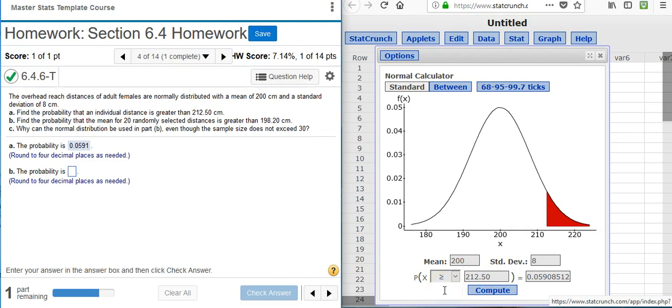Now before you rush off and just change this random variable value here in your normal calculator in StatCrunch, you need to make an adjustment to your standard deviation. Why? Because you're taking a sample that's greater than 1 in size.